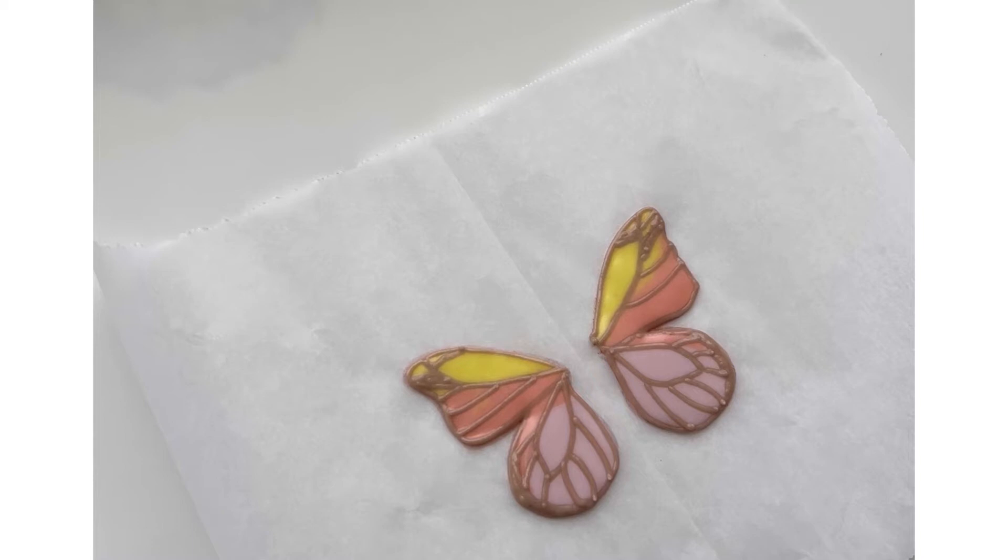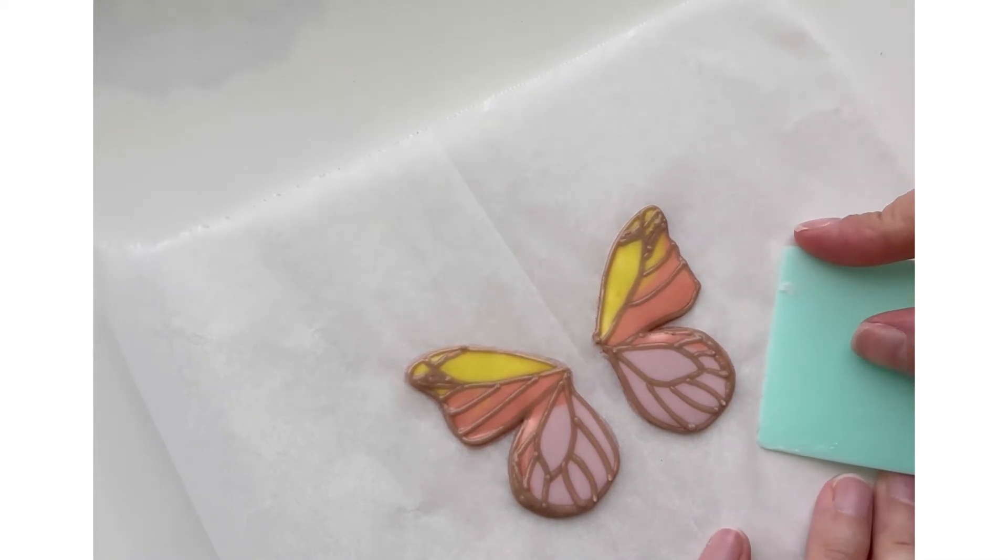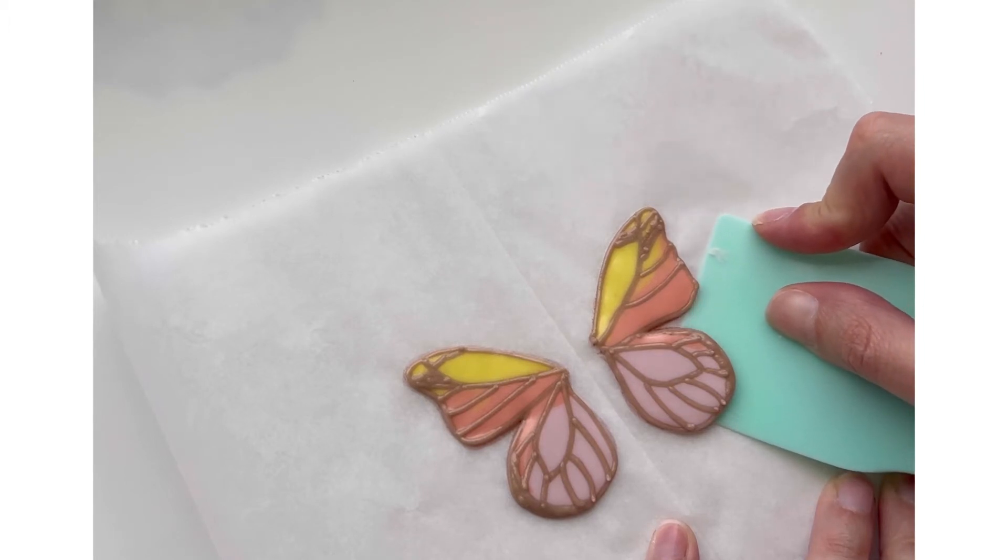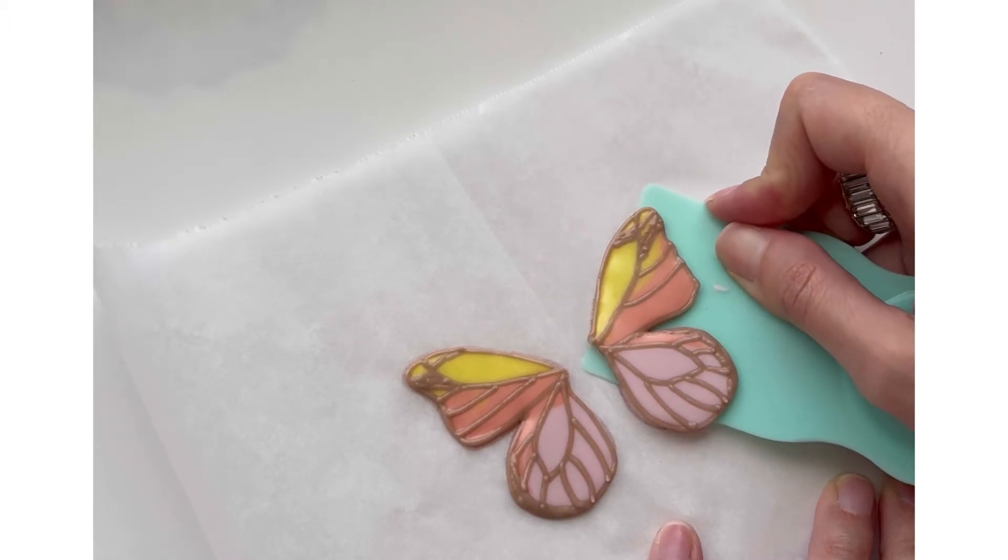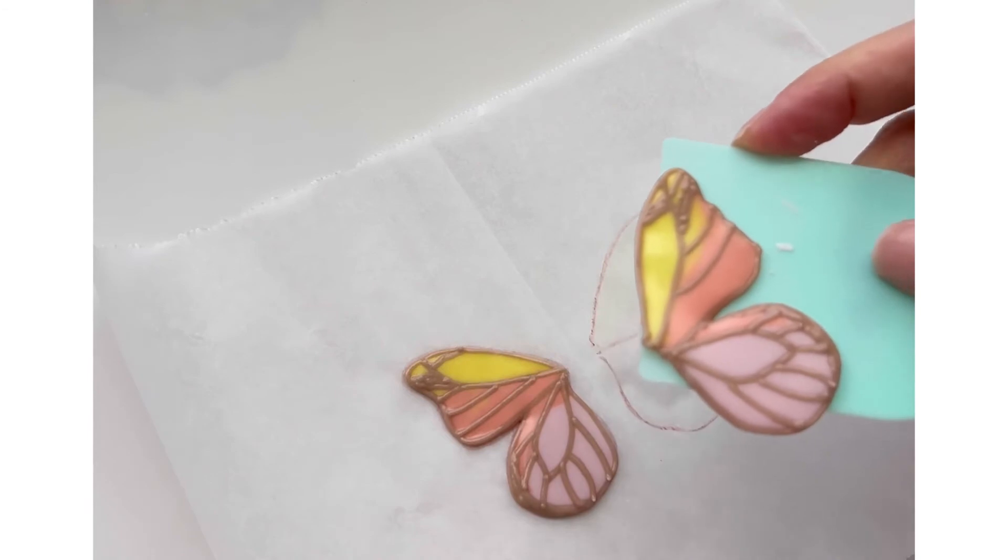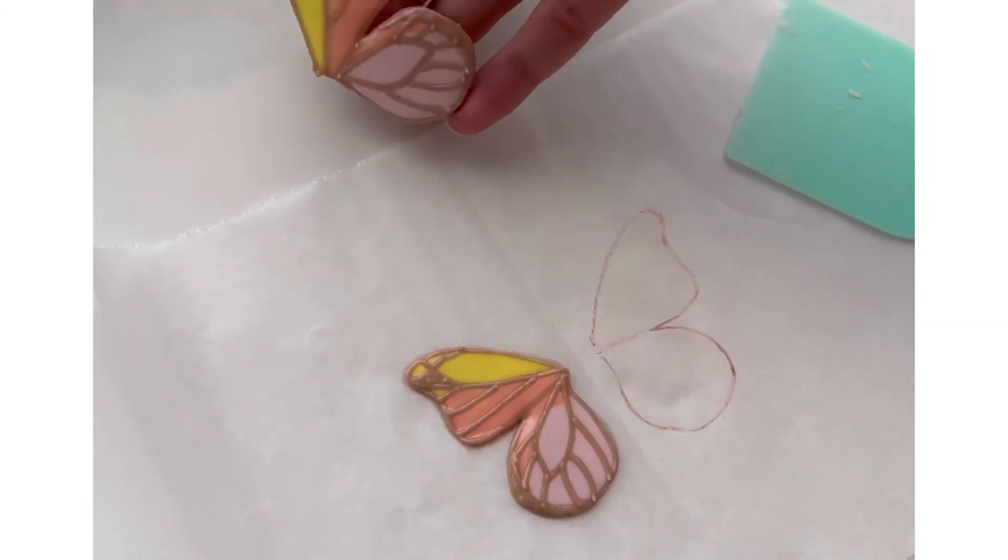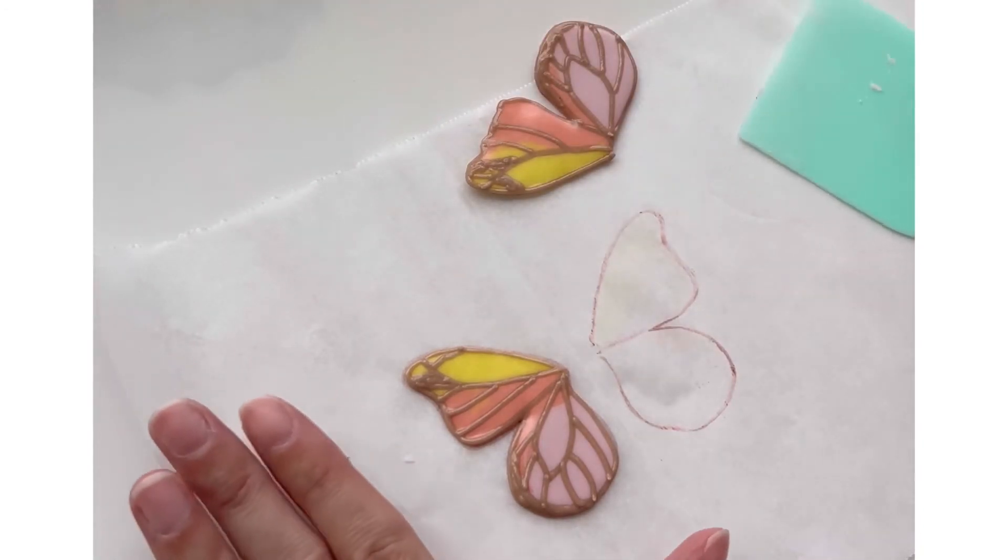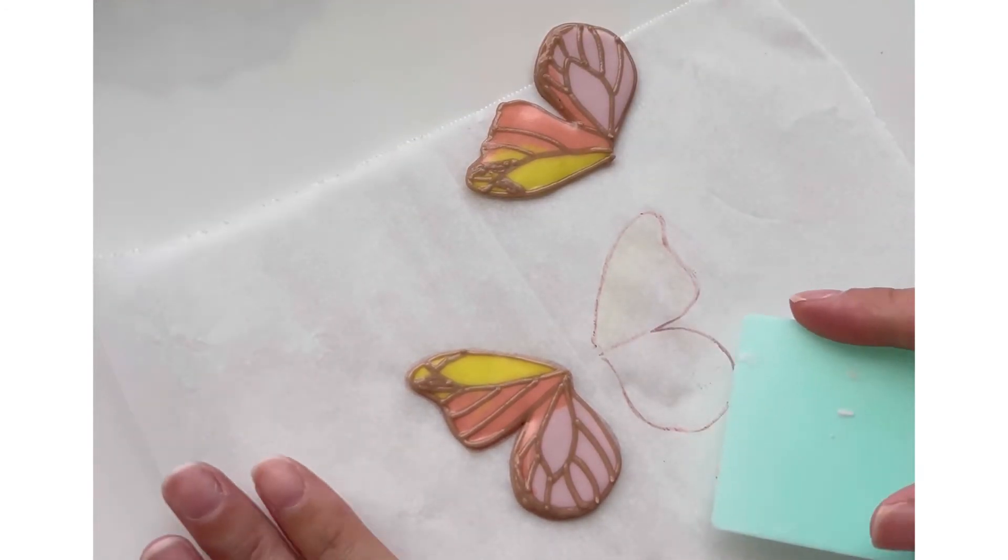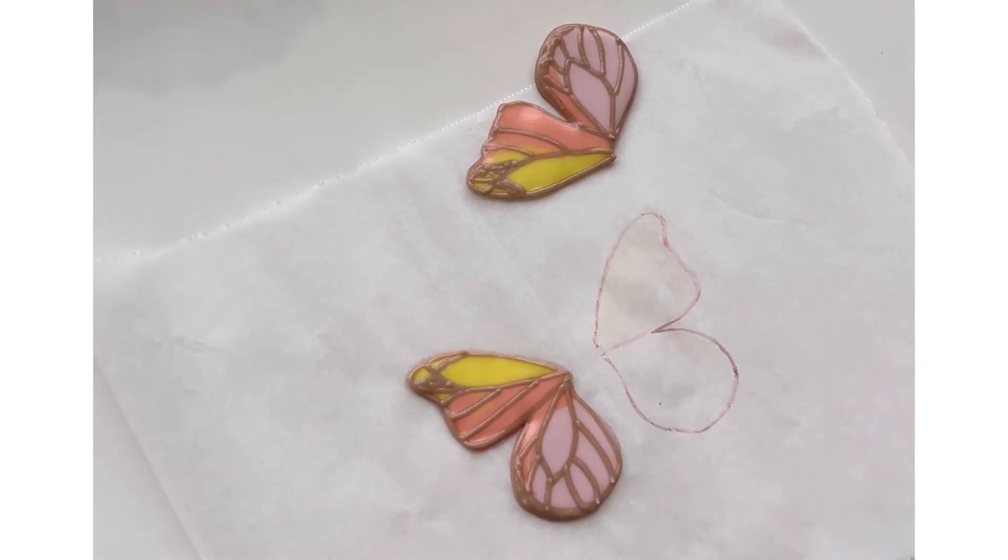Once you're sure your design is completely dry, you can peel it off the parchment. Because this was a little bit larger and very flat, I used this plastic scraper to slide underneath my wing and easily pop it off. The scraper is from Sweet Sugar Bell.